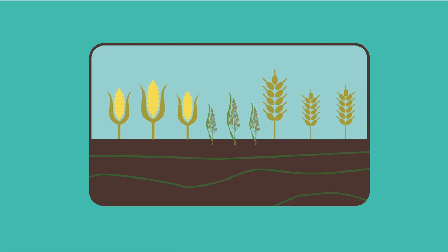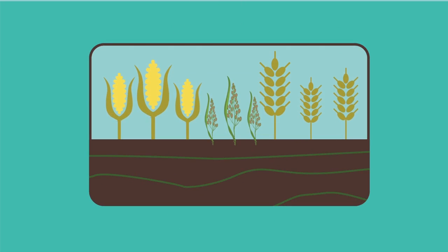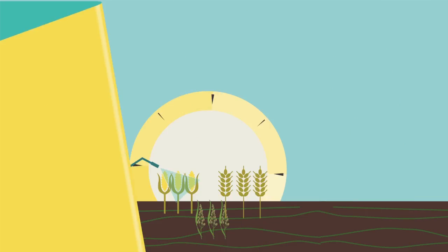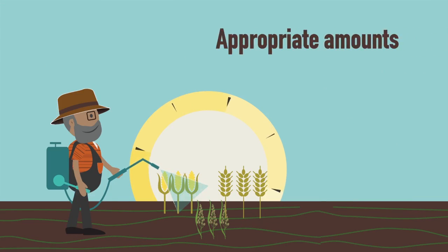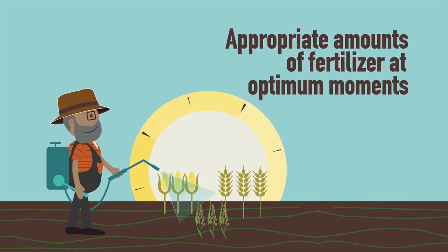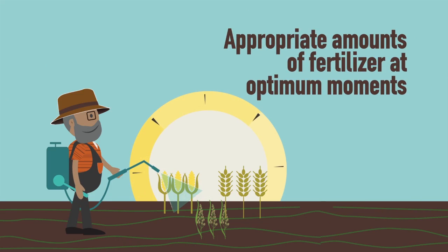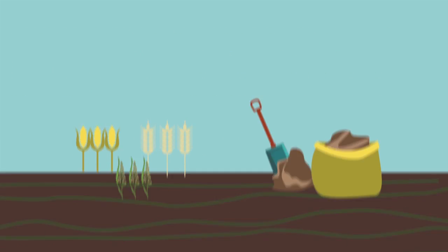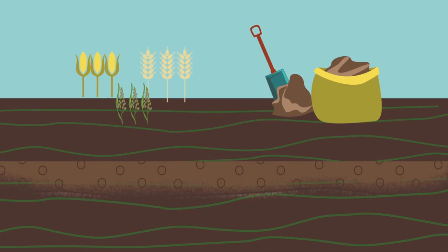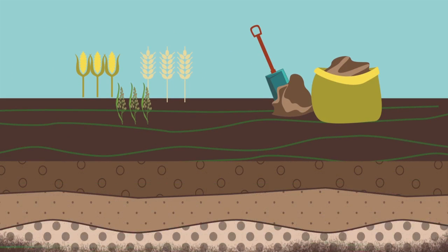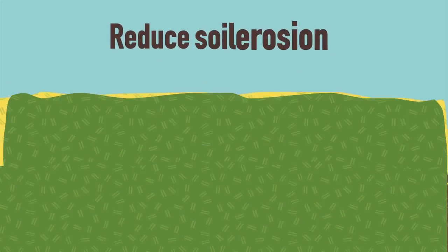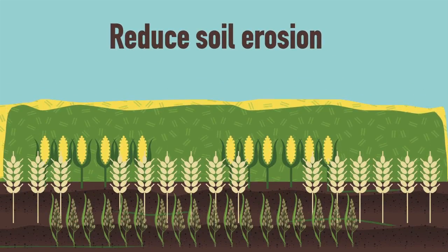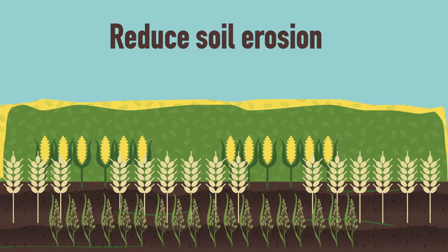For growing crops, GAPs will often include using appropriate amounts of fertilizers at the optimum moments during a crop cycle, applying manure to maintain the organic content of the soil, and reducing soil erosion by installing hedges and digging ditches.